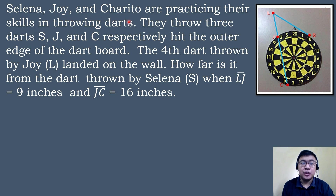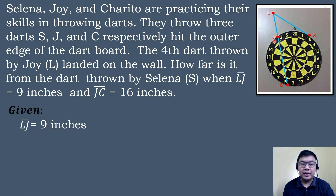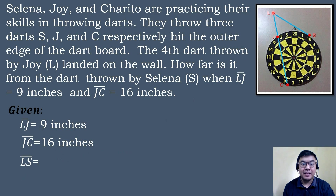Selena, Joy, and Charito are practicing their skills in throwing darts. They throw three darts — S, J, and C — which respectively hit the outer edge of the dart board. The fourth dart thrown by Joy landed on the wall. How far is it from the dart thrown by Selena, when segment LJ is equal to 9 inches and segment JC is equal to 16 inches? So let's list the following given: segment LJ is equal to 9 inches, segment JC is equal to 16 inches. We need to find the measure of segment LS.